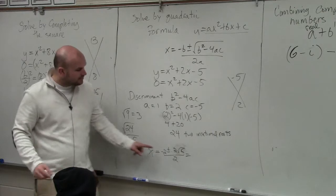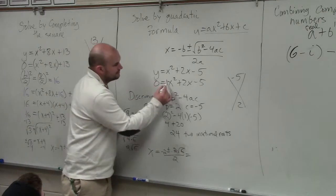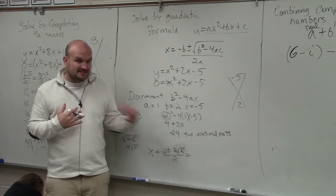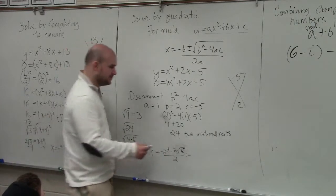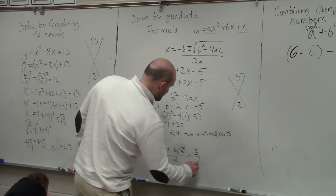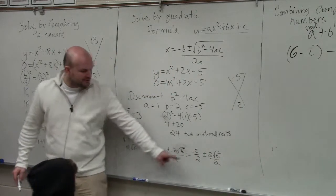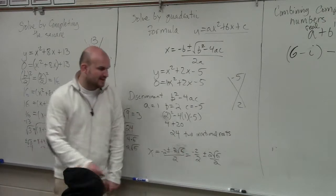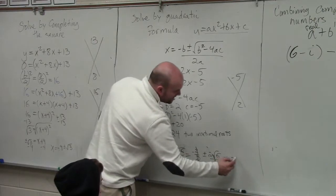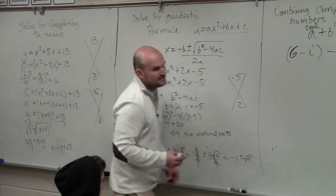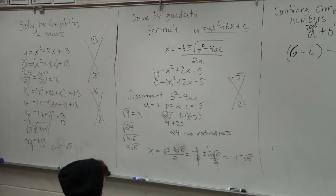So to simplify this, we need to divide the 2 into both of these terms. And once we divide the 2 into both of these terms, we need to simplify it again. So again, that divides to negative 1. That divides to positive 1. So it's negative 1 plus or minus the square root of 6. That would be your final simplified answer.